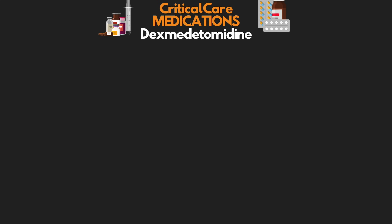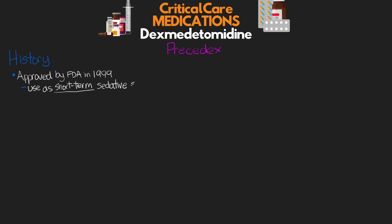Alright, so with that said, let's go ahead and begin our lesson talking about dexmedetomidine, which commonly goes by the trade name Presidex. On our history and background, it was only recently approved in 1999 by the FDA for the use as a short-term sedative and analgesic — so less than 24 hours — for critically ill or injured patients who are mechanically ventilated in the ICU.